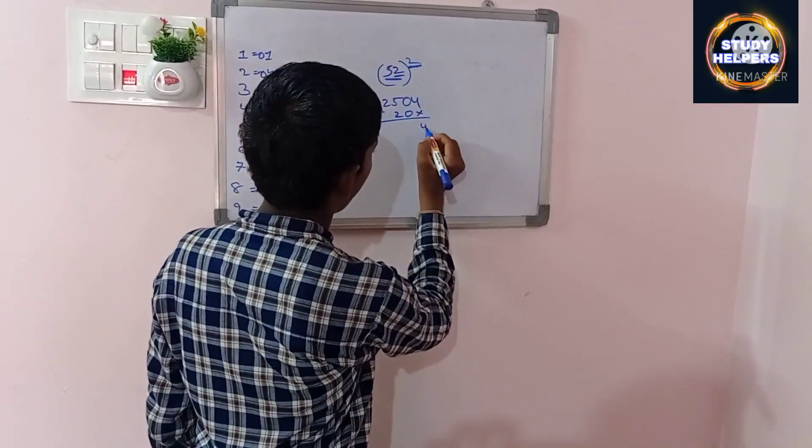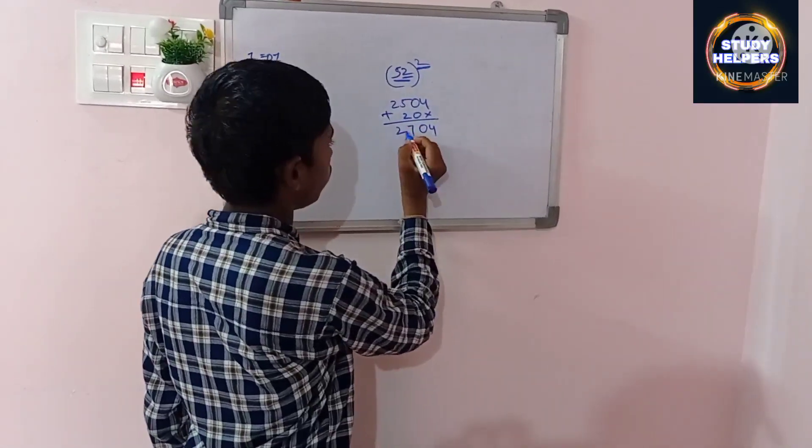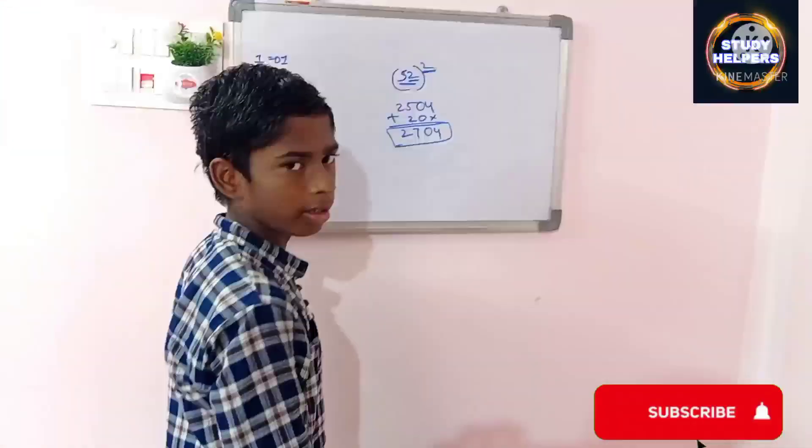We should add 4, 0, 7, 2. This is the square number of 52 square.